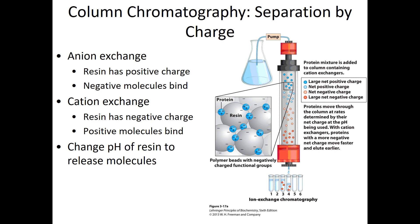Now that the negatively charged molecules are stuck on the positively charged resin, how do we get those proteins to let go? The negative charges on the proteins come from negatively charged amino acids, which are negatively charged at neutral pH. To make that negative charge go away, we lower the pH enough to protonate those carboxylic acids so the protein is no longer negatively charged.